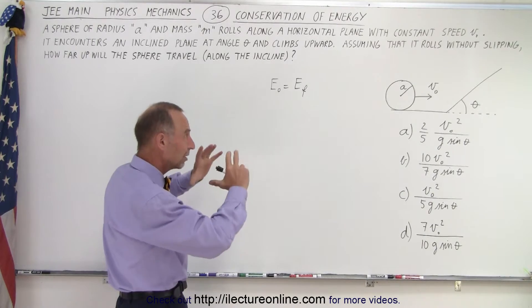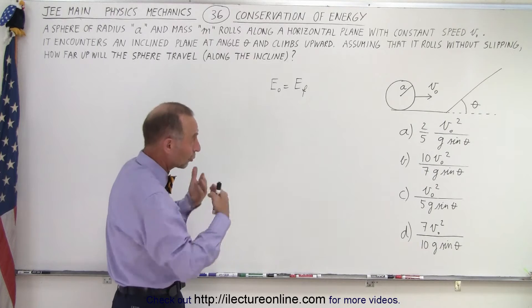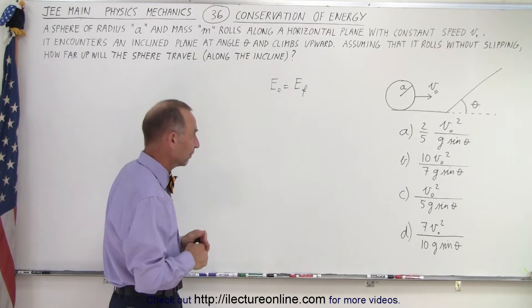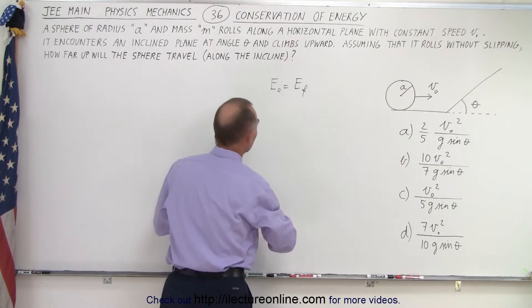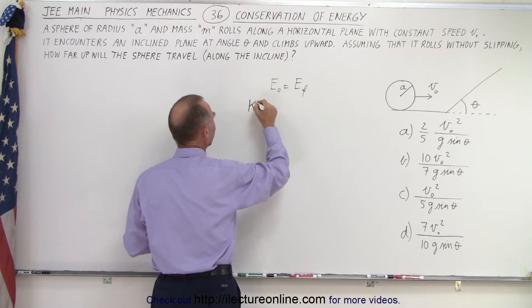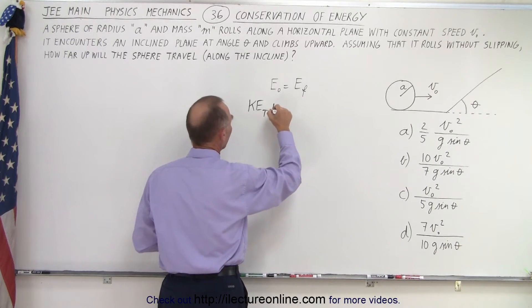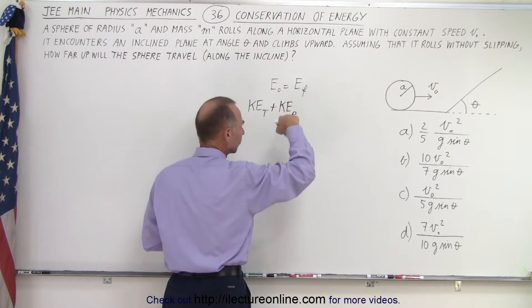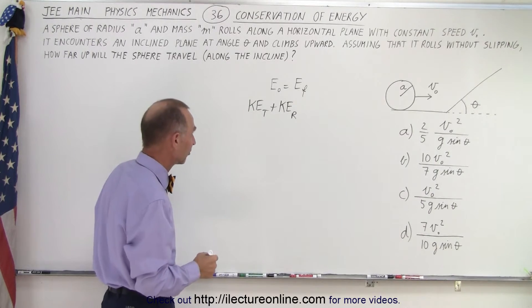Also, they don't tell us whether it's a hollow sphere or a solid sphere, which would make a difference. So we're going to assume a solid sphere. Initially, we have kinetic energy as the ball is rolling. That means we have kinetic energy translational, movement along a straight path, plus kinetic energy rotational because it's rotating about its axis.